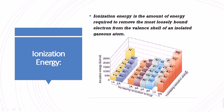Today we are learning about ionization energy. Ionization energy is the amount of energy required to remove the outermost electron from the valence shell of an isolated gaseous atom. When we want to remove the electrons from the outermost shell of any atom, we use a certain amount of energy to remove that electron.